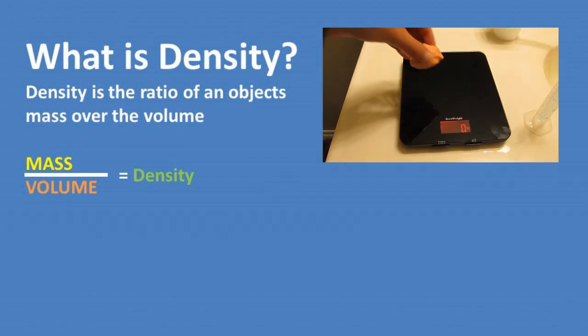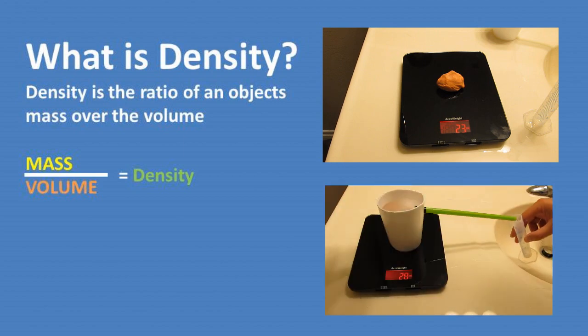To find out what the object's mass is, we can use a scale to weigh the object. In this case, we have an irregular piece of clay that weighs 23 grams.